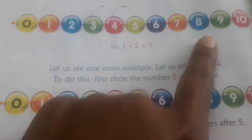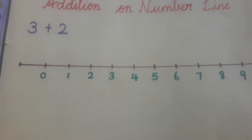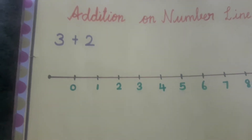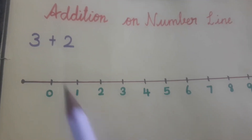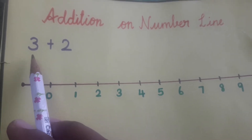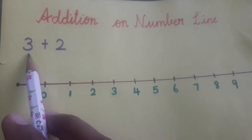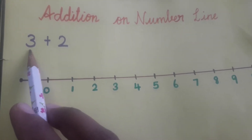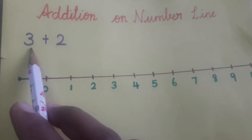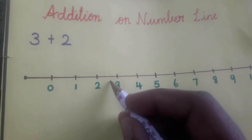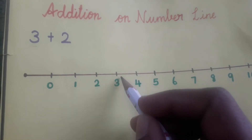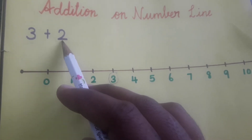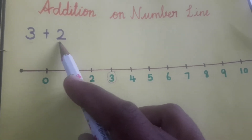Let us add 3 and 2 by using a number line. To add these numbers, first we have to circle number 3 on the number line. The numbers are 3 and 2. The first number is 3, so we have to circle number 3. Where is number 3? Yes, here is number 3 — so we circle it first.